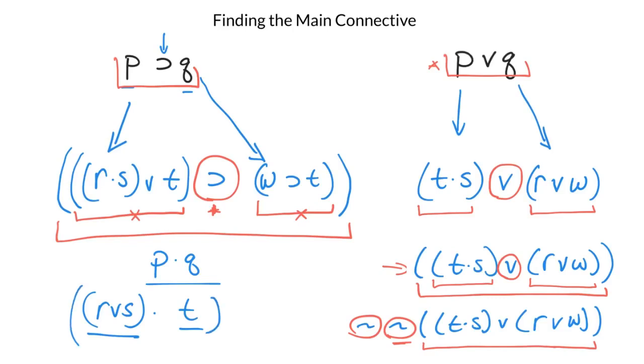If I throw in parentheses on the outside, it doesn't change that the conjunction is still the main connective. So that still remains the main connective.